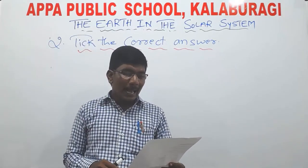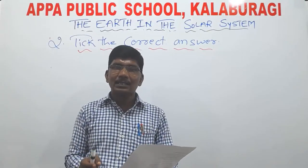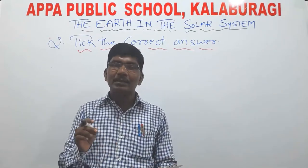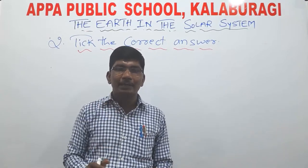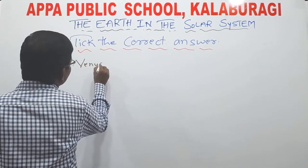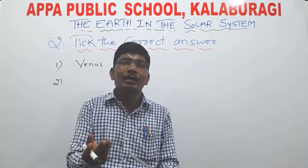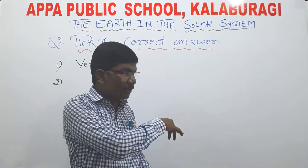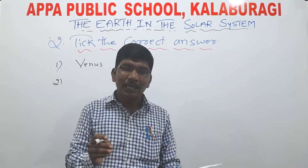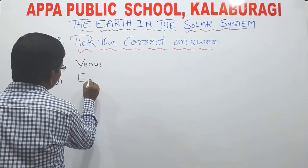Question A: the planet known as the earth's twin is — options are Jupiter, Saturn, Venus. The answer is Venus. Question B: which is the third nearest planet to the sun? Options are Venus, Earth, and Mercury. The answer is Earth.